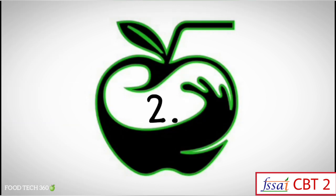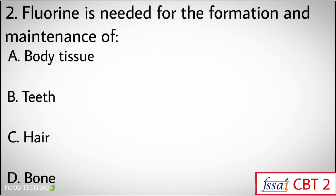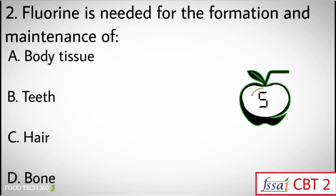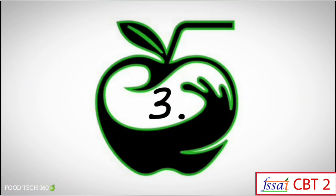Question number 2: Fluorine is needed for the formation and maintenance of — Options: A) Body tissue, B) Teeth, C) Hair, D) Bone. Correct answers: B) Teeth and D) Bone.